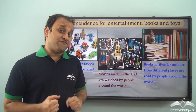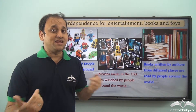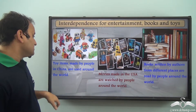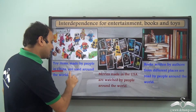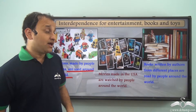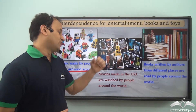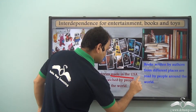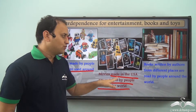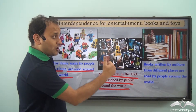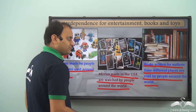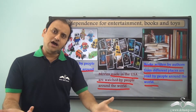Apart from food and farming, we are interdependent for many other things, for example entertainment, books and even toys. Toy items are mostly made by people in China and used around the world, so we are mostly dependent on people of China for our toy items. Movies made in the USA are watched by people around the world, so for entertainment too we are interdependent. Books written by authors from different places are read by people around the world, so even for books we are interdependent.